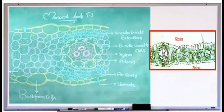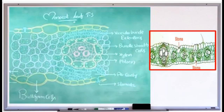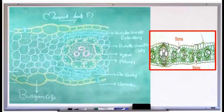Now we move on to the isobilateral leaf structure of the monocot plant. In the isobilateral leaf, there are three important structures: epidermis, mesophyll, and vascular bundle. The epidermis has upper and lower epidermis; cuticles and stomata are present, and some specialized large, thin-walled cells called bulliform cells are also found — these are very peculiar to the isobilateral leaf.